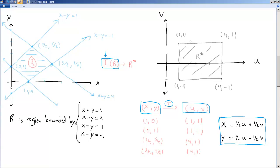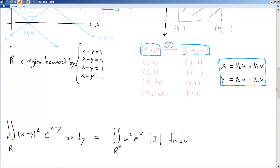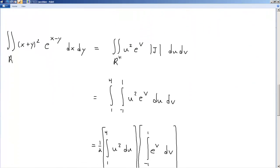Now, this makes the region much easier to integrate, okay? So let's take a look at what our integral now becomes. The integral R of x plus y squared, e to the xy, dx dy, we already said this was u, this was v, okay?